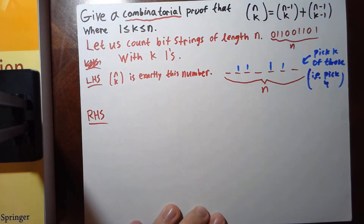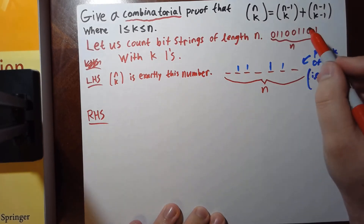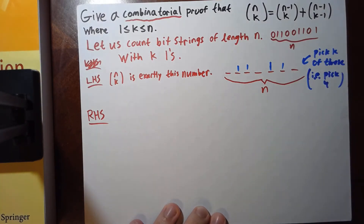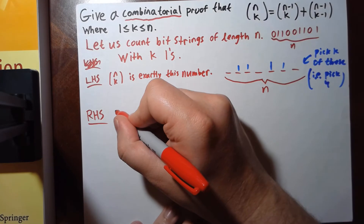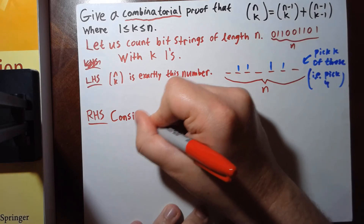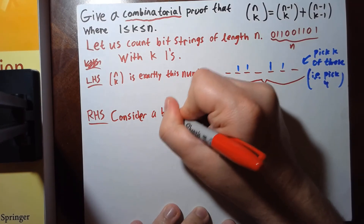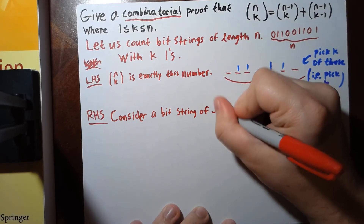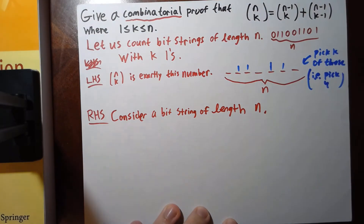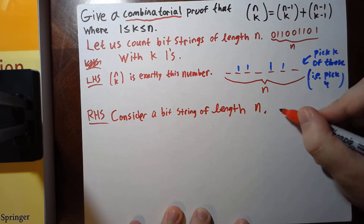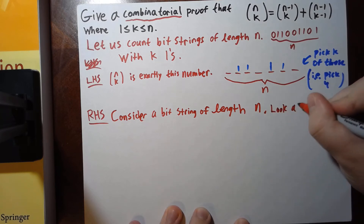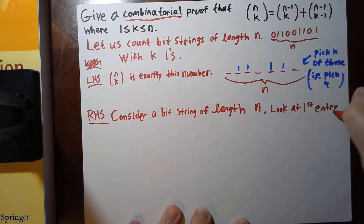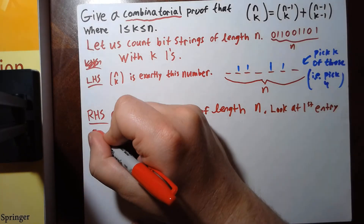The right-hand side is where it becomes interesting, because now we have something that involves addition. The idea is we want to break up how we count. Consider a bit string of length n. If we look at the first entry, there are going to be two cases.